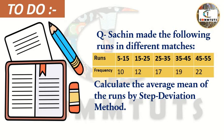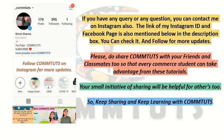Students, today's to-do — your homework — is this question: Sachin made the following runs in different matches. Runs and frequency are given. You have to calculate the average mean of the runs by using step deviation method. Please solve the to-do questions given in every tutorial — it gives you practice. Share your solutions with me on Instagram so that students with correct answers can be featured in the next tutorial.